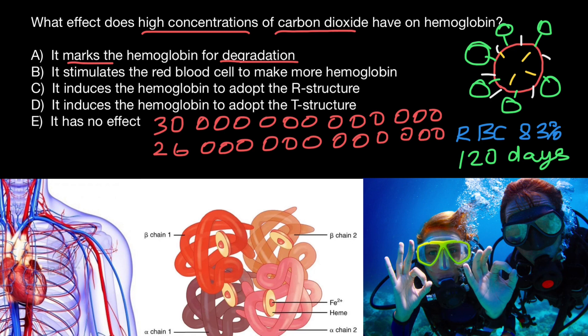Every second, our organism destroys two to three million red blood cells — and produces the same number, each requiring 300 million hemoglobins times four polypeptide chains. Just a few days ago I finished listening to an audiobook by a Russian surgeon who compared our organism to a biochemical tornado. I think that is the best description of what human life is.